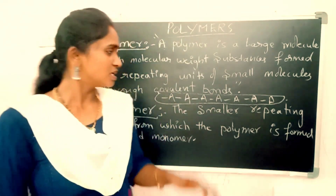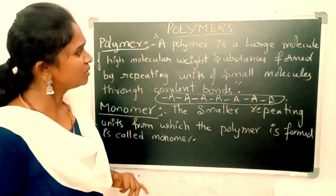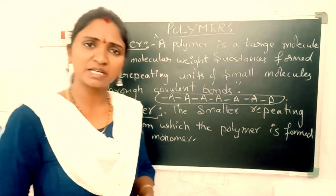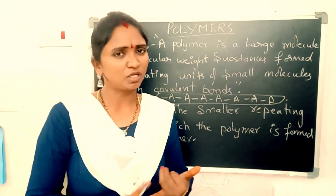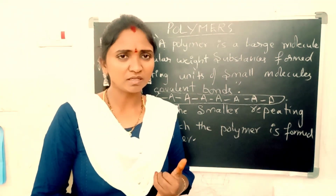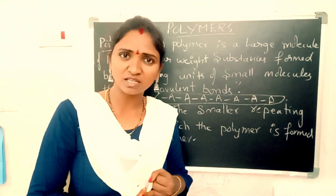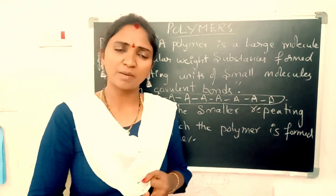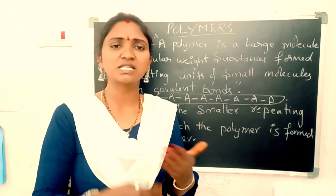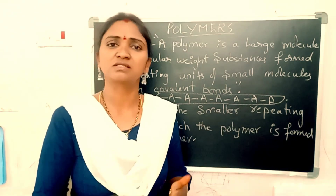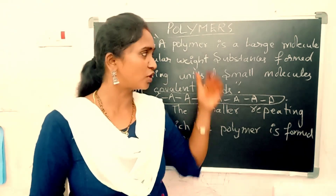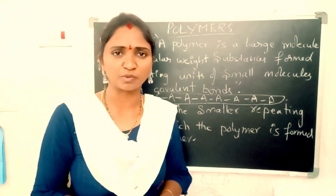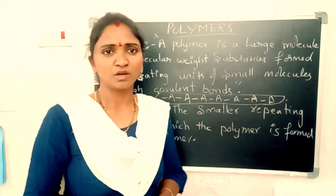Examples of polymers are polyvinyl chloride, polyethene, rubber, and many others.